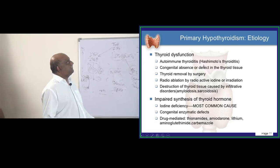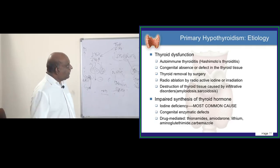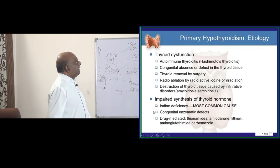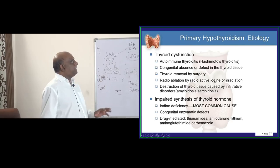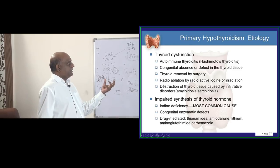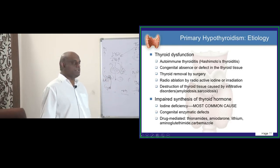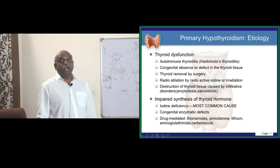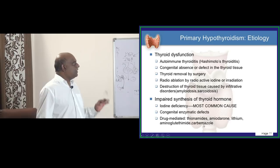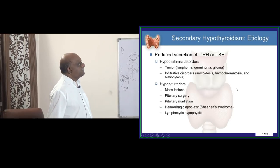Primary hypothyroidism causes: Hashimoto's thyroiditis, radio ablation, destruction by amyloidosis and sarcoidosis, iodine deficiency — the most common cause — congenital defects, amiodarone, lithium, carbimazole, and aminoglutethimide. These are all responsible.